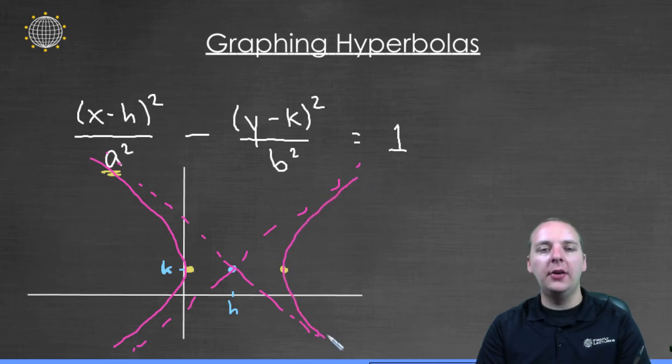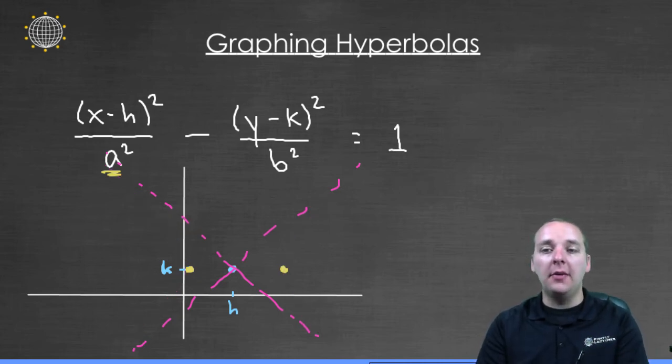So depending on how wide or narrow these asymptotes are, then that's going to dictate how narrow your hyperbola will be. So now the obvious question is this, how do we get those asymptotes?